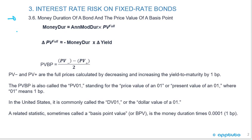Starting with the money duration of a bond: the formula is the annualized modified duration times the full price of the bond. The change in the full price of the bond equals the negative money duration times the change in yield.